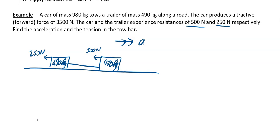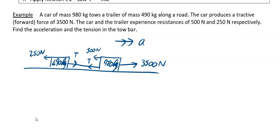Two other important forces act on the system: the tension in the tow bar. The trailer has no engine of its own, so the tension in the tow bar pulls it forward. By Newton's third law, if there is tension pulling the trailer forward, there must be an equal and opposite tension pulling back on the car. The forward tractive force of 3500 newtons also acts on the car. We are now ready to solve the question.